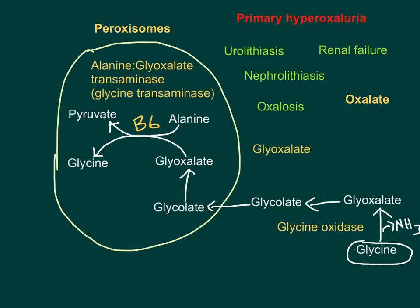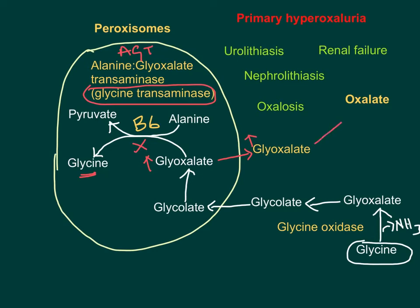This is the key reaction to understand in primary hyperoxaluria. In primary hyperoxaluria, there is a defect or deficiency in alanine glyoxalate transaminase (AGT), also referred to as glycine transaminase. A defect in AGT decreases the conversion of glyoxalate into glycine, leading to elevated glyoxalate in the peroxisome. When glyoxalate is elevated, it leaks out into the cytoplasm, increasing cytoplasmic glyoxalate levels.